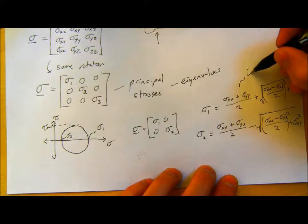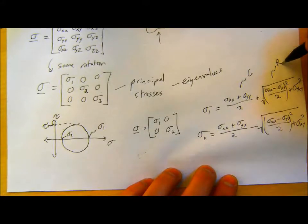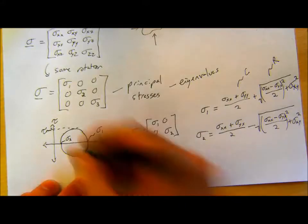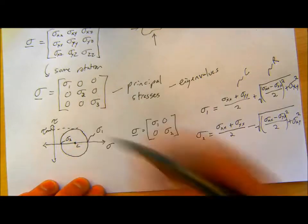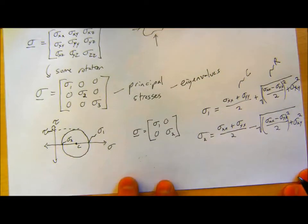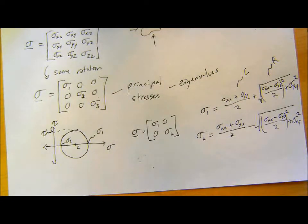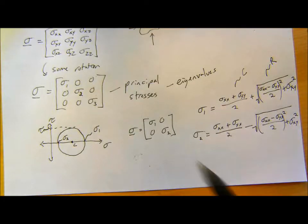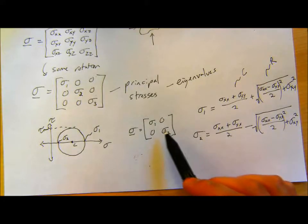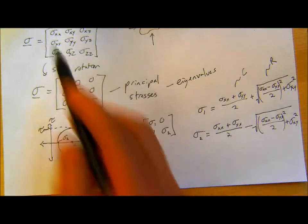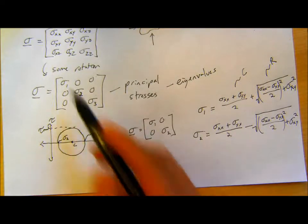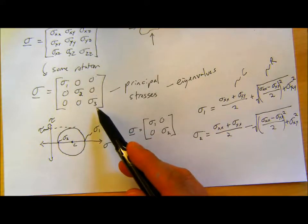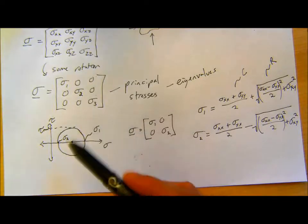So this is just a quick flashback to stress transformations and Mohr's circle. The important thing to remember is that in every stress state — in 2D or in 3D — there's some way you can pull out principal stresses. You can always rotate the stress tensor, or rotate your coordinate system, to some orientation where you only have principal stresses acting in tension or compression on the sample.